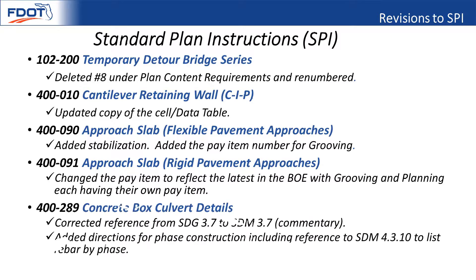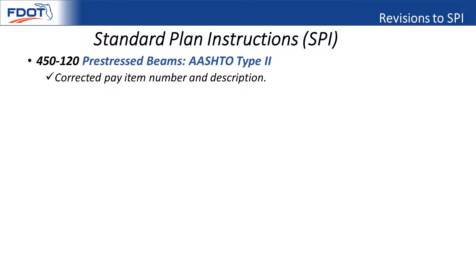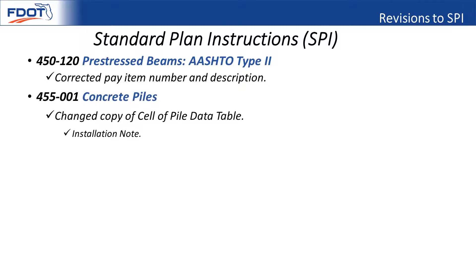Another issue we came up with is that EORs were not separating the quantities for box culverts by phase. So we modified the SPI to make that requirement clear. That is the same for all bridges or any structures done in phase construction — we need to separate those because that's how construction looks at them. Most of these were all just updates to the cells.